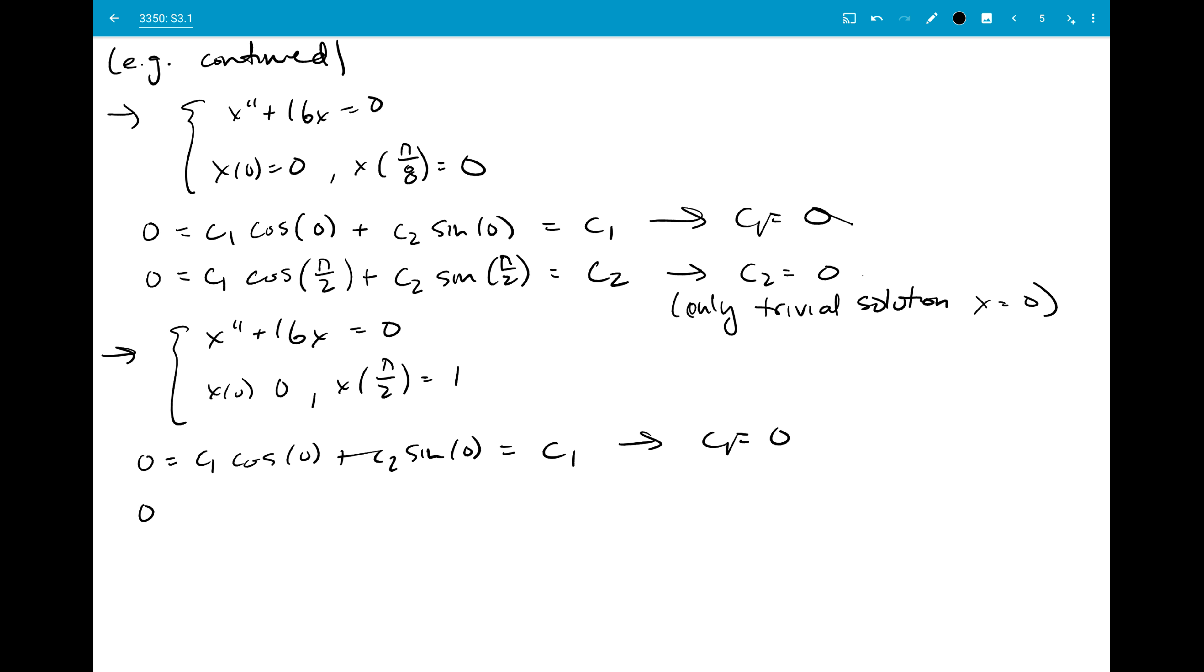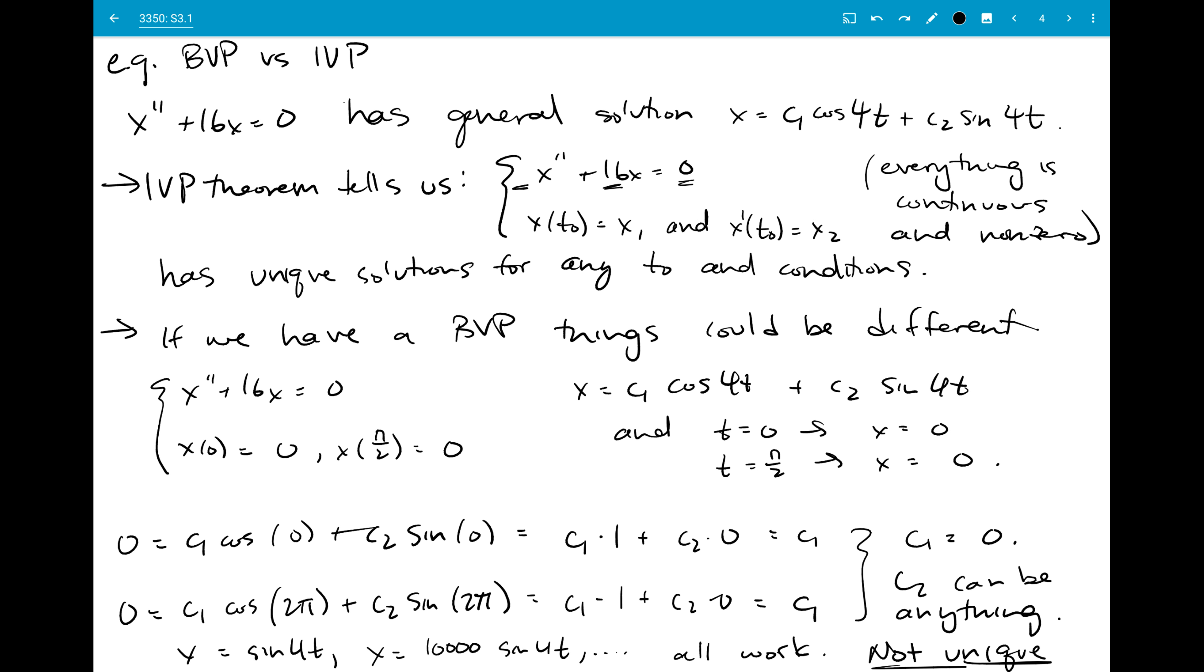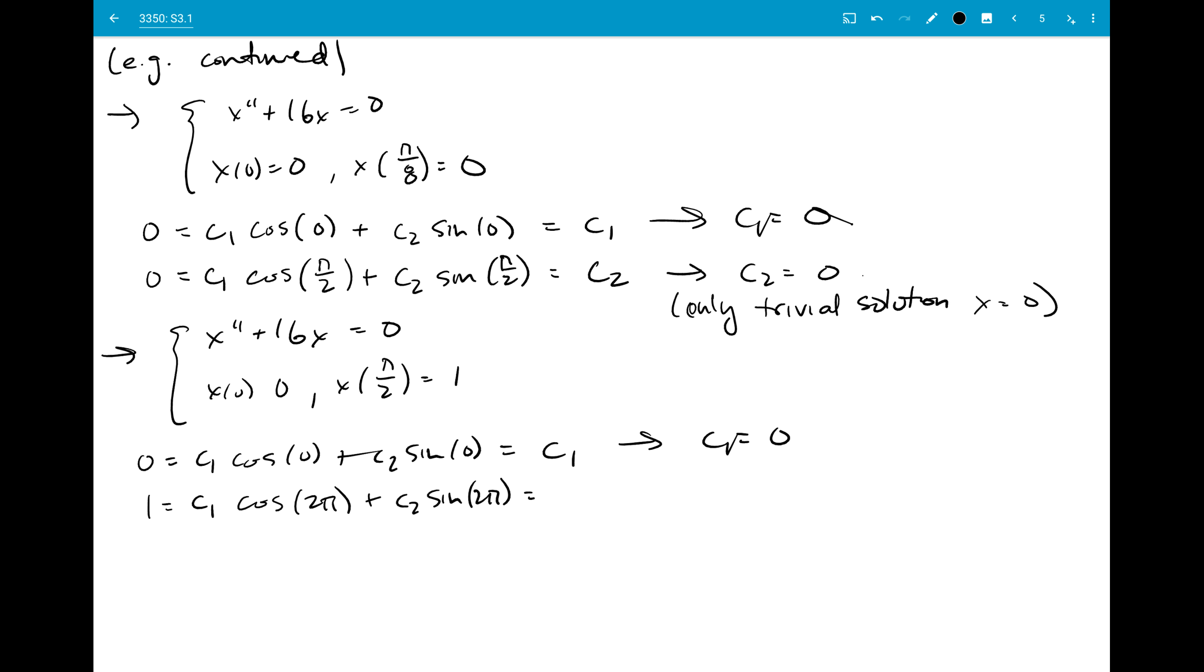But now I want to have 1 equal to c1 cosine of 4 times pi over 2, so just 2 pi again, plus c2 sine of 2 pi. And when we did this problem before, we saw that that just ends as c1 again. So I need to have c1 equal to 1, and both those things can't be true at once. I have no solution to this boundary value problem.